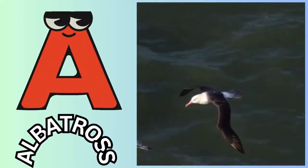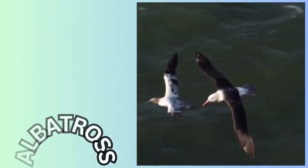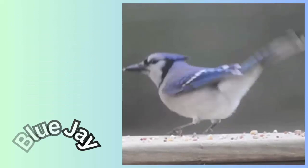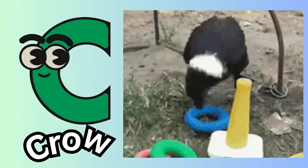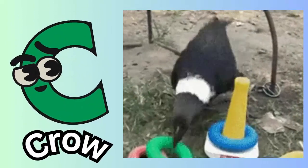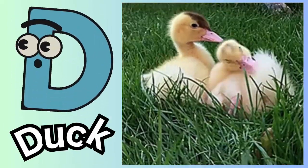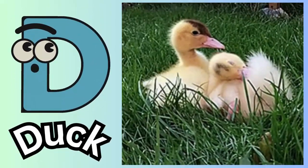A. A for albatross. B. B for blue jay. C. C for crow. D. D for duck.